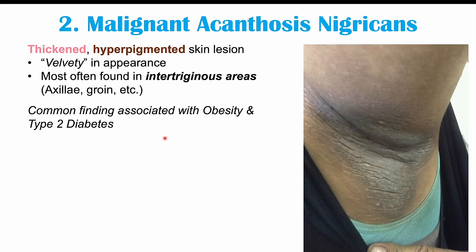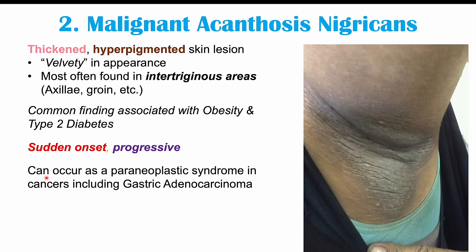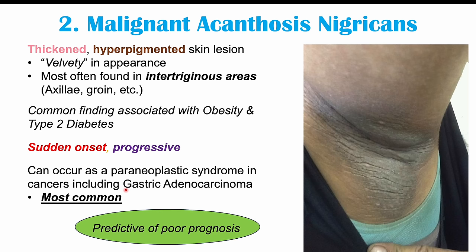If acanthosis nigricans is caused by an underlying cancer, it's going to often have a sudden onset and be progressive — it can occur all of a sudden and worsen over time. This is different compared to acanthosis nigricans caused by obesity and type 2 diabetes, where development is slower. Gastric adenocarcinoma is the most common cancer that causes malignant acanthosis nigricans. If we see this as a potential feature in patients — sudden onset that's progressive — it's often going to be predictive of poor prognosis.